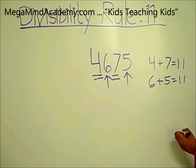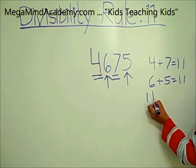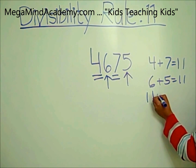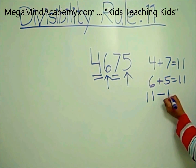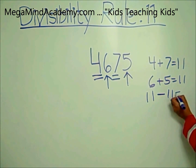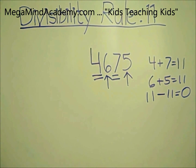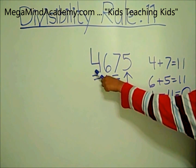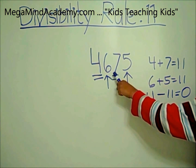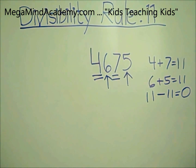So you subtract 11 from 11. It becomes 11 minus 11 which equals 0. Since 0 is divisible by 11, 4,675 is divisible by 11.